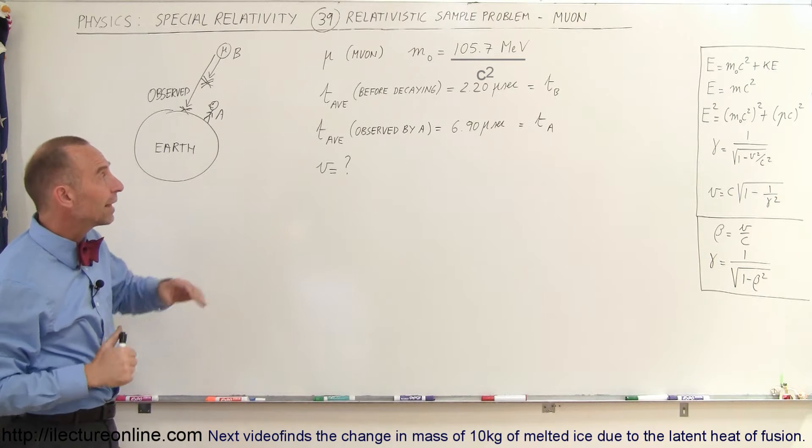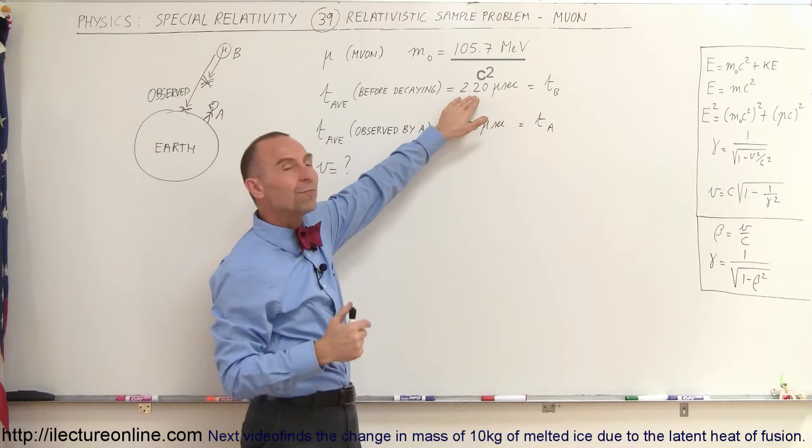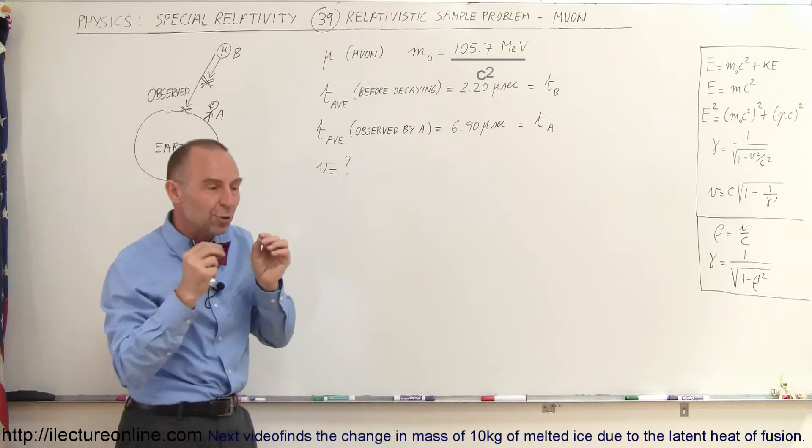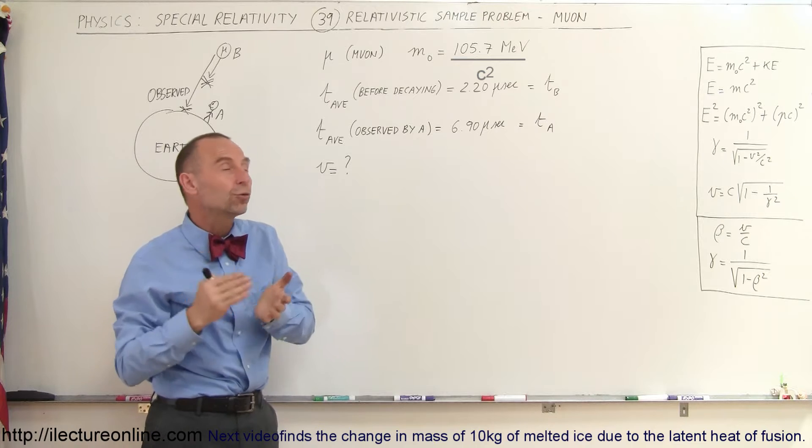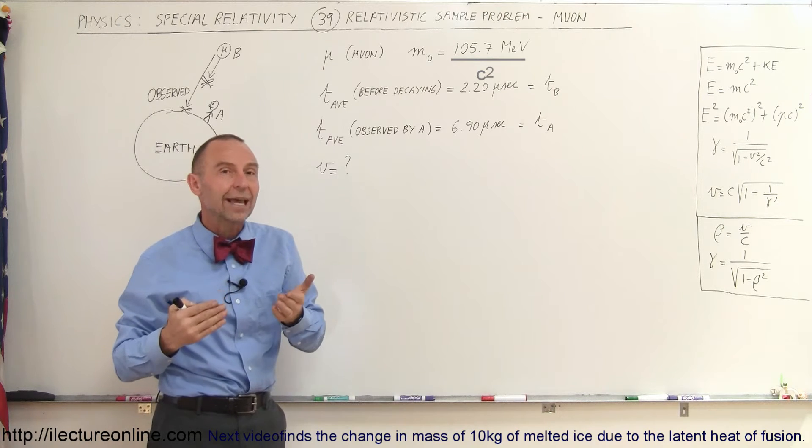We know that they decay after about 2.2 microseconds on average, which means any muon that's formed lasts only for about, on average, 2.2 microseconds before it decays.